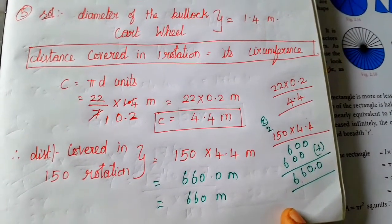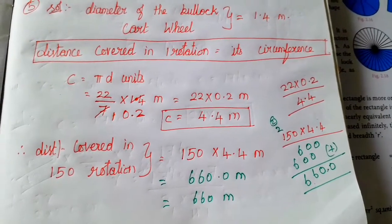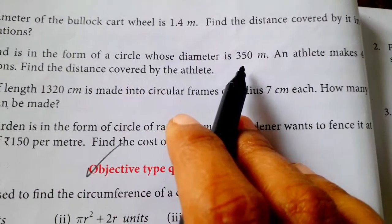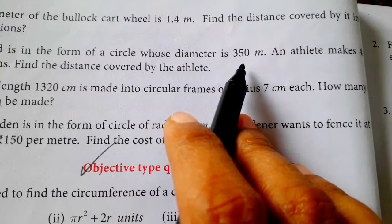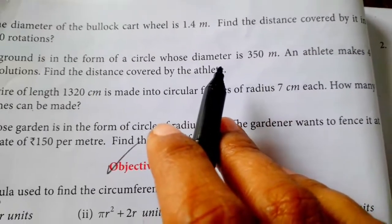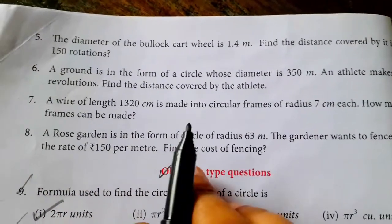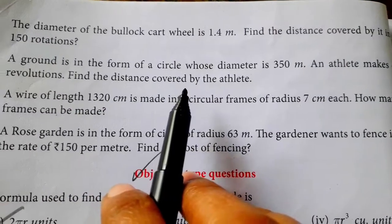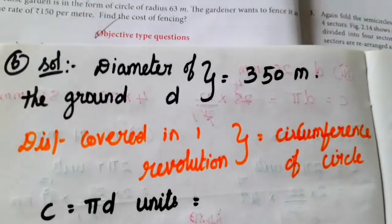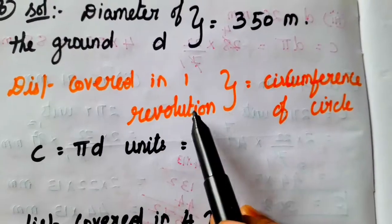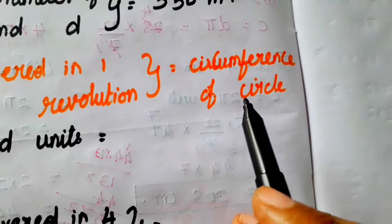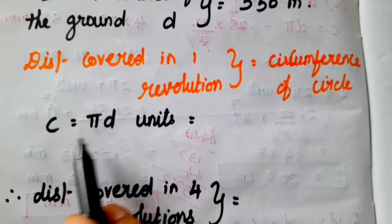Students, this is a 5-mark step problem. Problem 6: a ground is in the form of a circle whose diameter is 350 meter. An athlete makes 4 revolutions on the ground. Find the distance covered by the athlete. Solution: diameter of the ground is equal to 350 meter. Distance covered in 1 revolution is equal to the circumference, C = pi d.